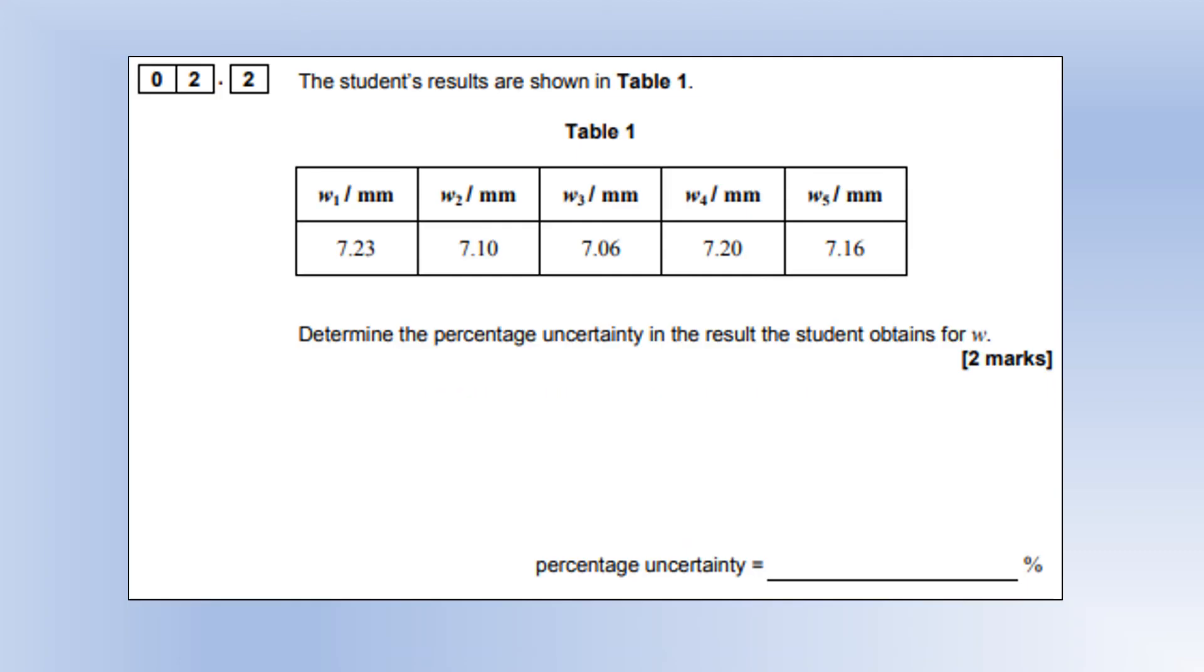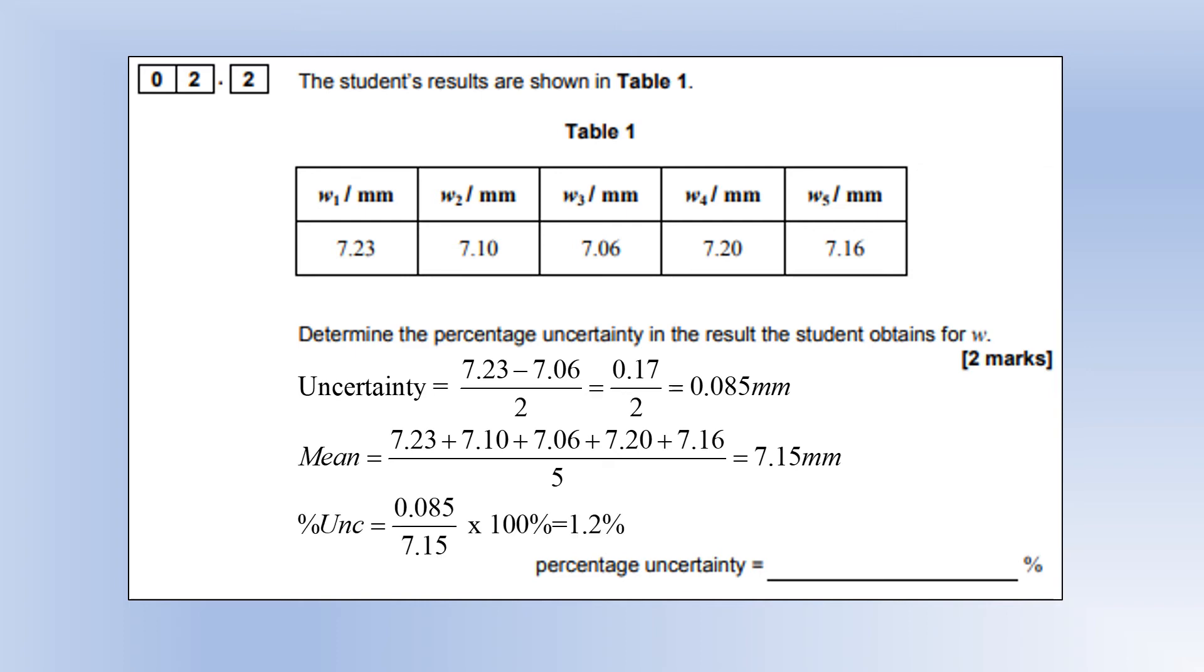The student results are shown. Determine the percentage uncertainty in the W value. First of all, the uncertainty is range of repeat readings divided by two. Then we can calculate the mean to find out what the best value is. And the percentage uncertainty is going to be uncertainty over mean times 100%, which is 1.2%.